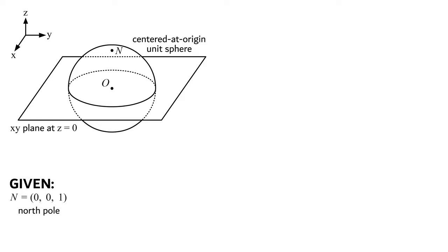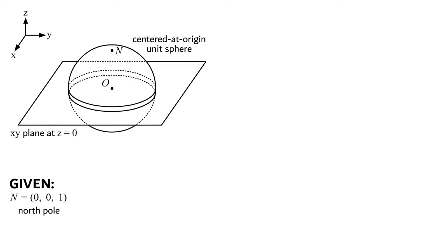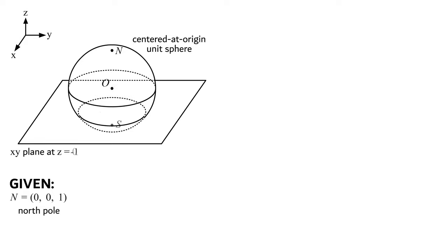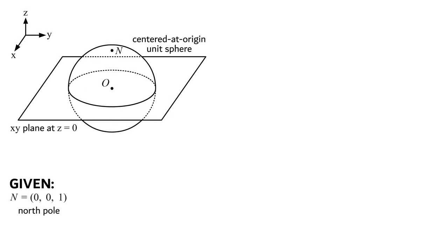Let's now draw an xy plane which slices through the equator of the sphere at height z equals 0. This plane, in reality, extends out to infinity, but it looks smaller in order to conserve screen space. Some people may prefer to have the plane positioned elsewhere, such as at the bottom of the sphere, such that the sphere and plane intersect each other at only the south pole. This choice would also be fine, but I'll keep the plane at the equator for this video.